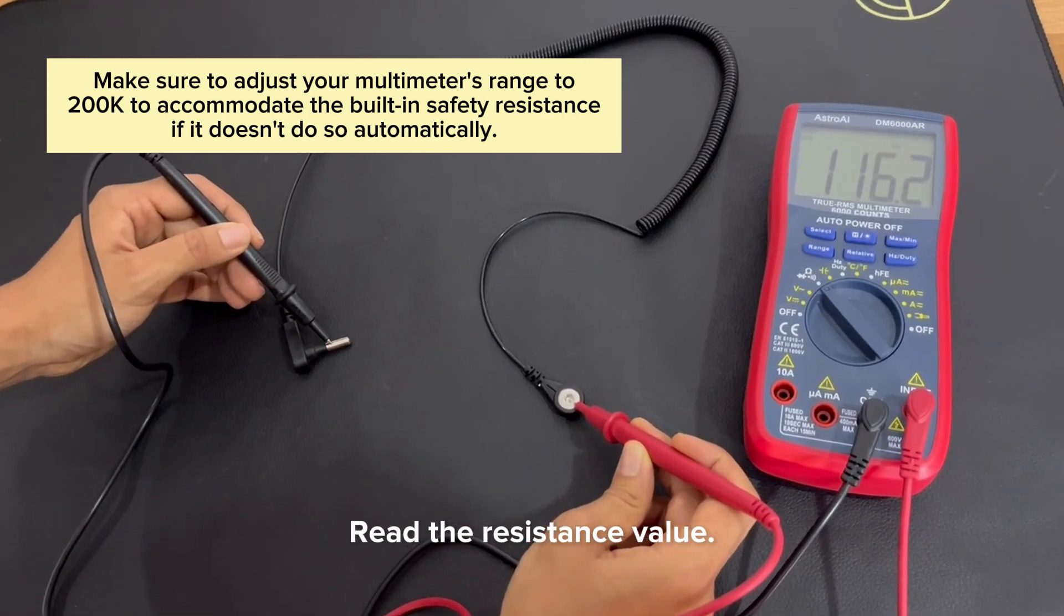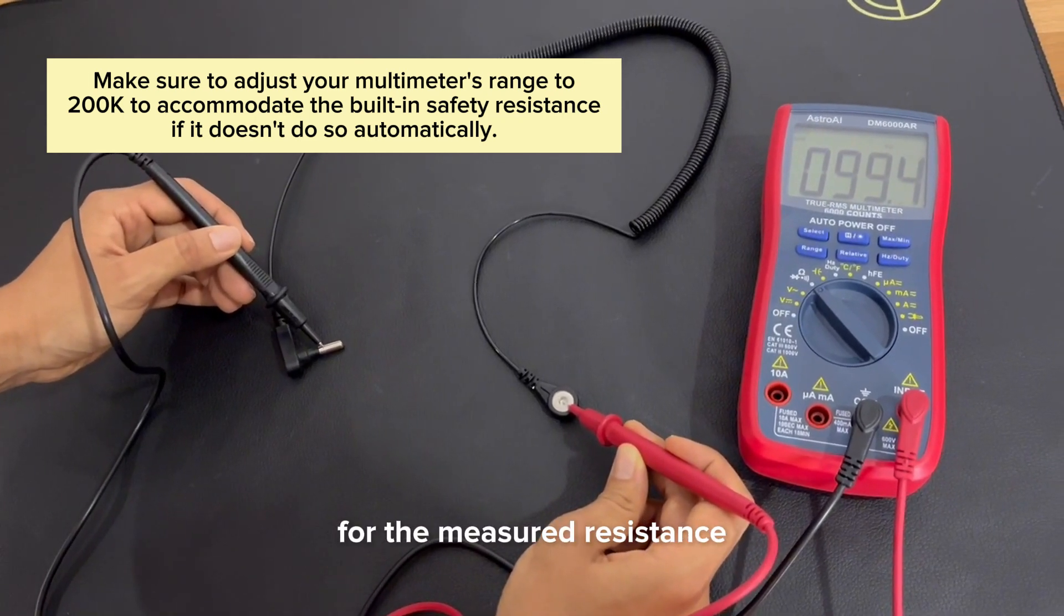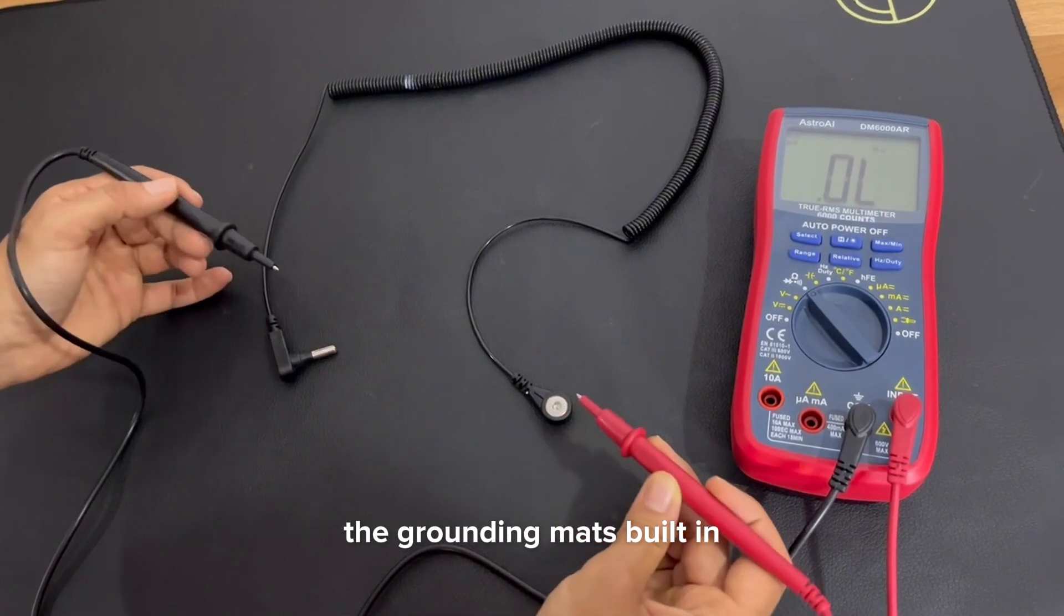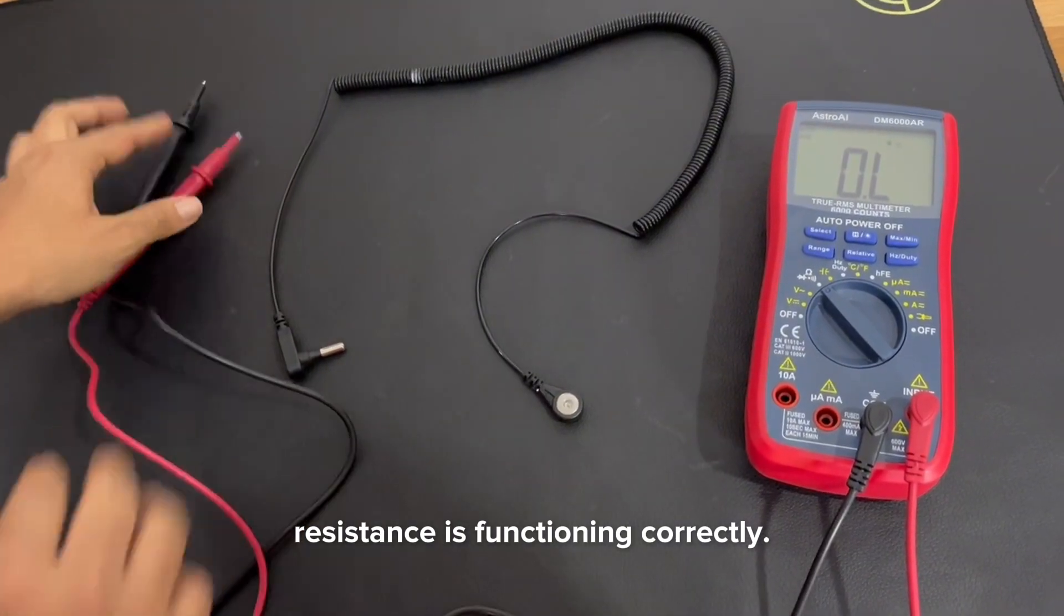Read the resistance value. Check the multimeter display for the measured resistance. If it is close to 100k ohms, the grounding mat's built-in resistance is functioning correctly.